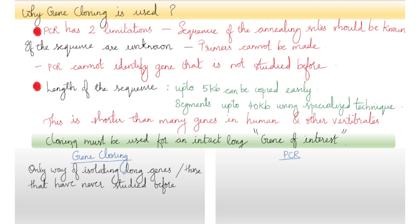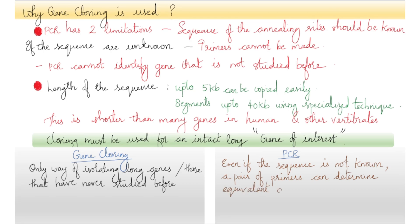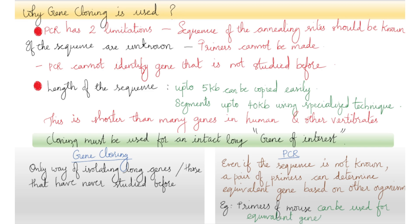Gene cloning is therefore the only way of isolating long genes or those that have never been studied before. But the PCR still has many important applications. For example, even if the sequence of a gene is not known, it may still be possible to determine the appropriate sequence for a pair of primers based on what is known about the sequence of the equivalent gene in a different organism.